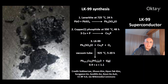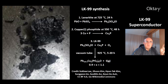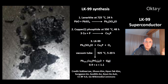This is the synthesis of LK99. The first step is the synthesis of lanarkite at 725 degrees Celsius from lead oxide and lead sulfate. The second is copper-phosphate synthesis from the elements. The third is the synthesis of LK99 from lanarkite, copper-phosphate, and oxygen in a redox reaction in a vacuum tube. This gives you LK99, and the by-product is sulfur.